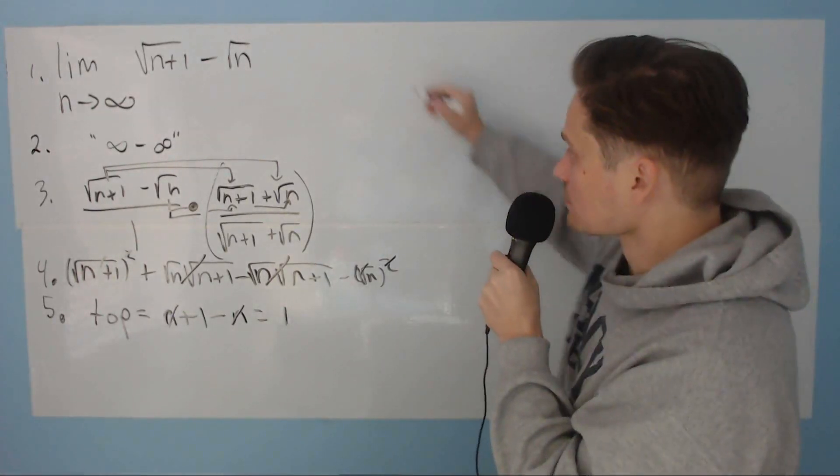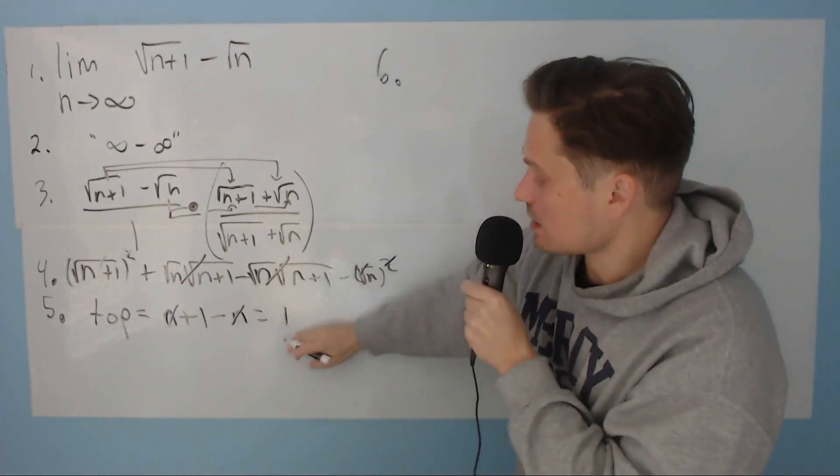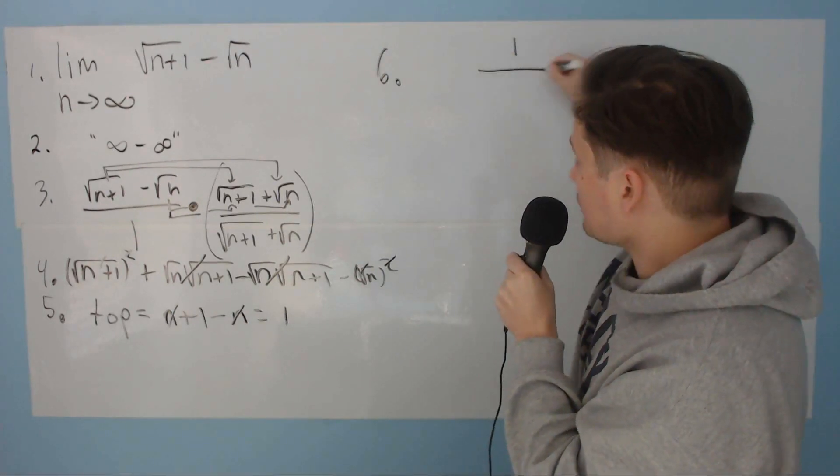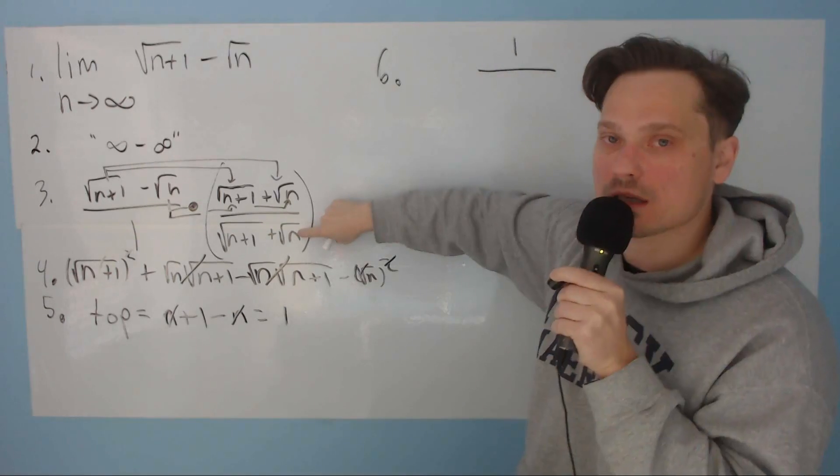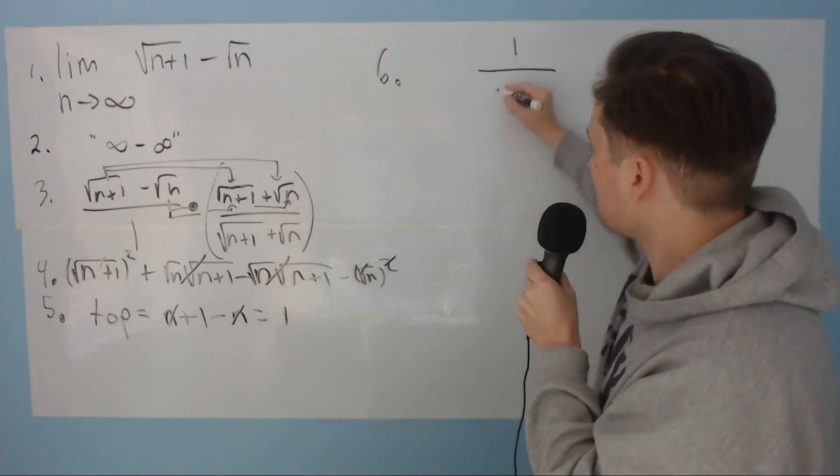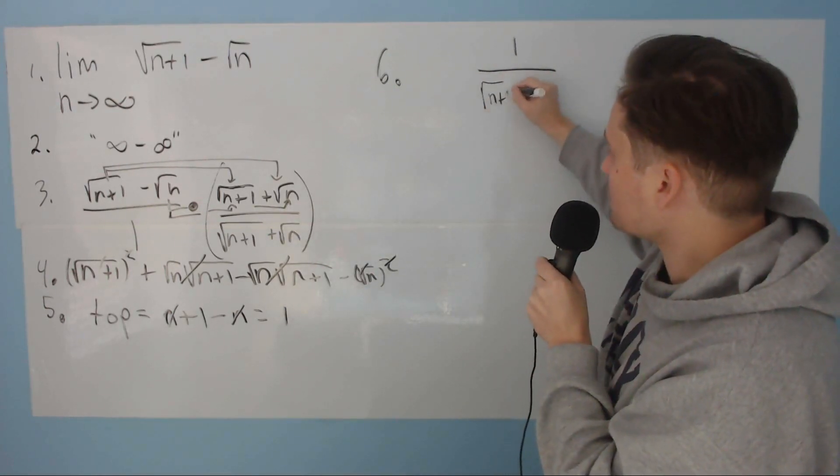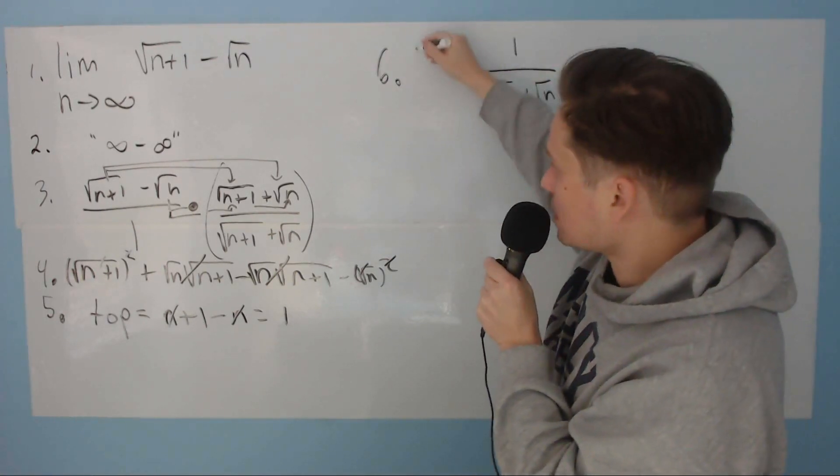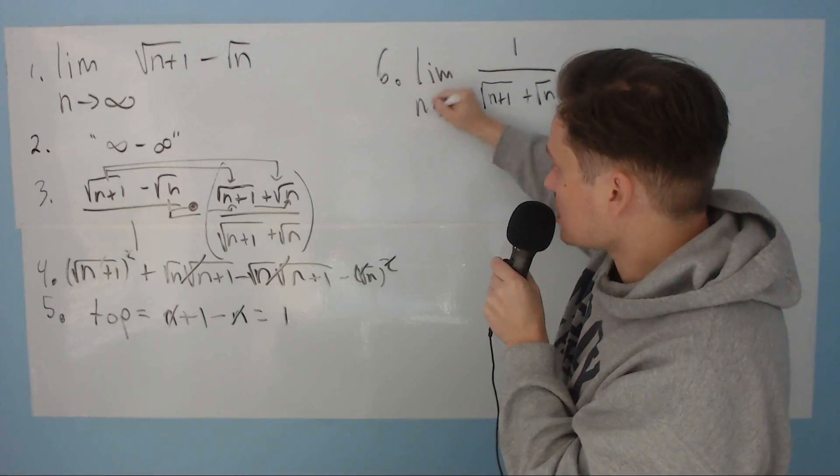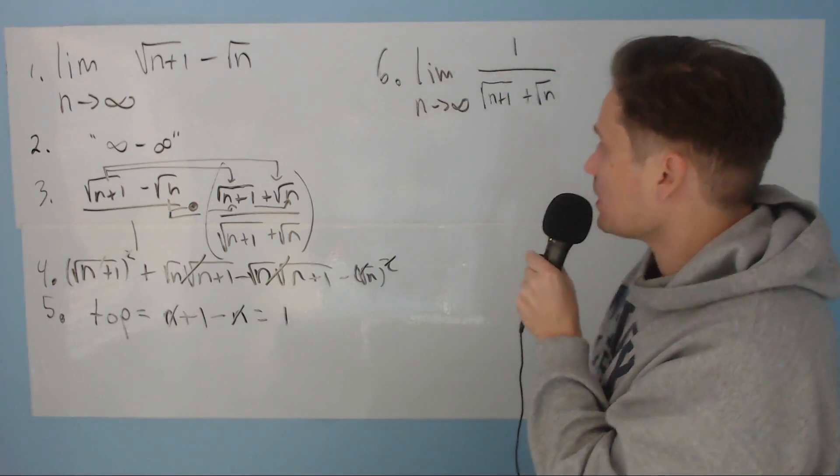So now we can rewrite our limit over here at step 6. So it kind of looks like the following. Take a look. Step 6, I'm going to take the new top, which is 1, I'm going to put it over in your new bottom. The new bottom is this bottom from step number 3 right here. So it becomes the root of n plus 1 plus the root of n, and then you put the limit in here. Limit as n goes to positive infinity.